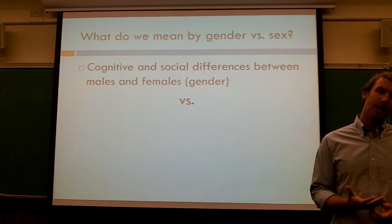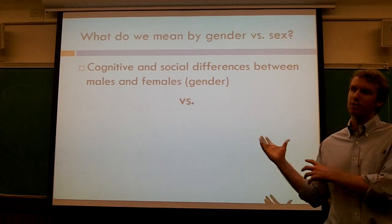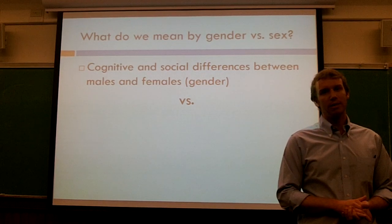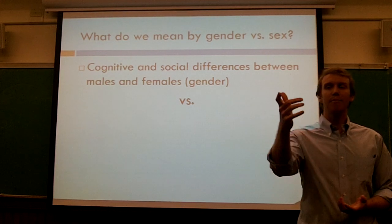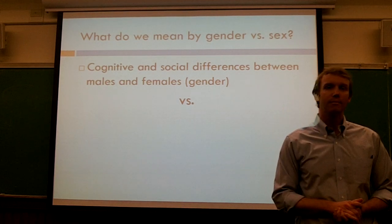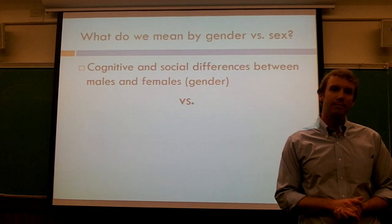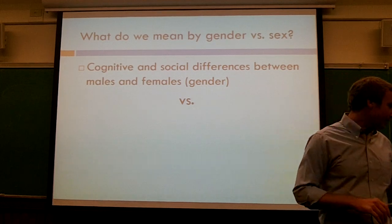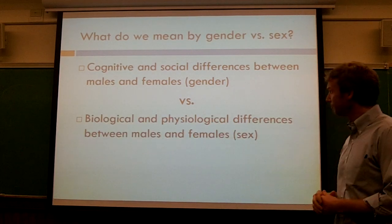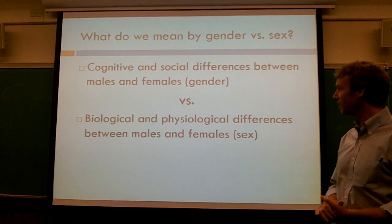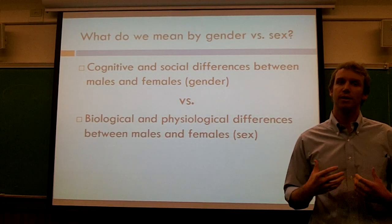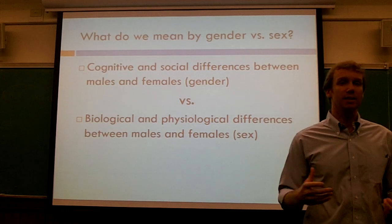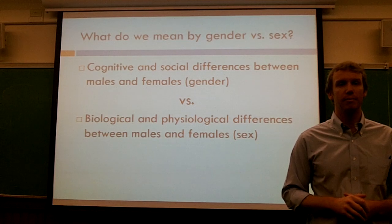And then how about sex? If gender has to do with cognitive and social differences, what might sex mean? A student responds: when you say males and females, that's our biological sex. That's a great description. When we talk about sex, that's when we're getting into the biological stuff — sex organs, physiology, and physical differences that separate males from females.